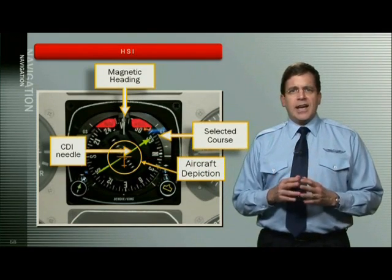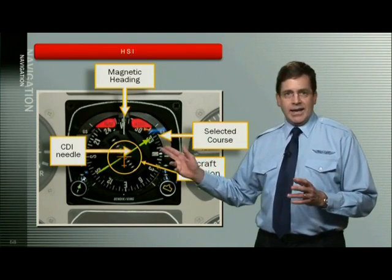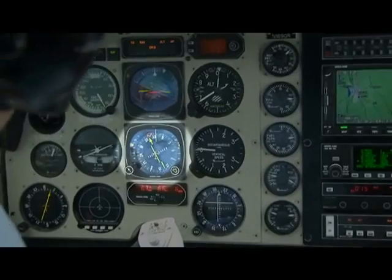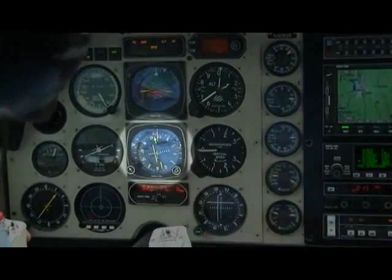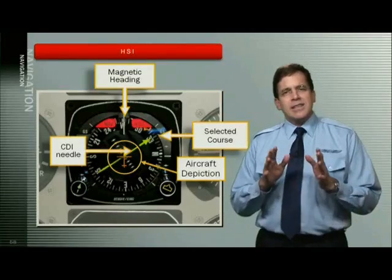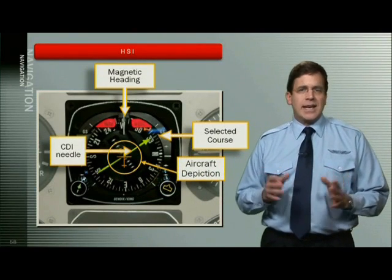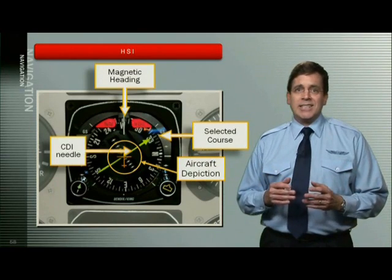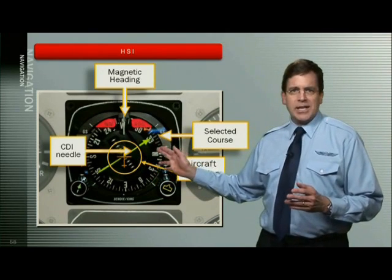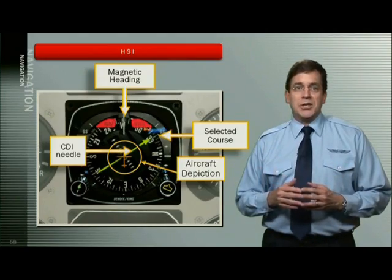To fly the HSI, you turn the HSI selector knob until the top of the needle indicates your desired heading. If you turn to that same heading, the CDI indicates whether the course you seek is to your left or to your right, and you can turn towards the desired course to intercept it at an angle. The tail of the CDI needle represents the reciprocal of the heading selected with the CDI pointer. The best part of the HSI is the center visual depiction of a small aircraft and the angle of intercept that it shows for the selected radial, giving you a great visual representation of your situation.